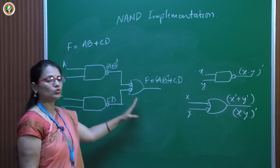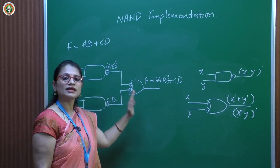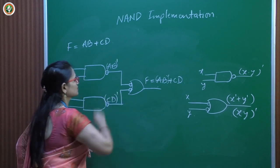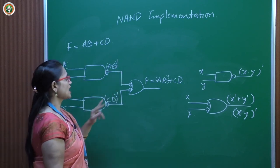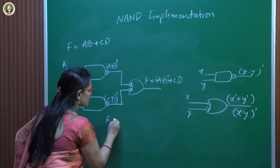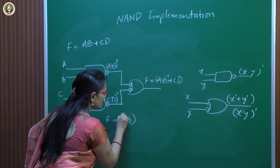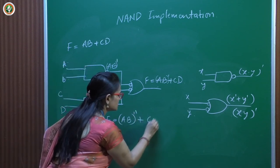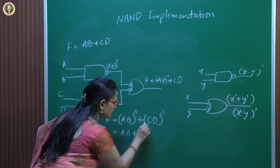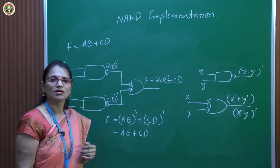Let us verify the output is the same. The inputs to the final gate are (AB)' and (CD)'. The output is ((AB)')' + ((CD)')') which simplifies by De Morgan's to (AB)'' + (CD)'' = AB + CD — exactly the desired output. So the NAND-NAND circuit correctly implements F = AB + CD.